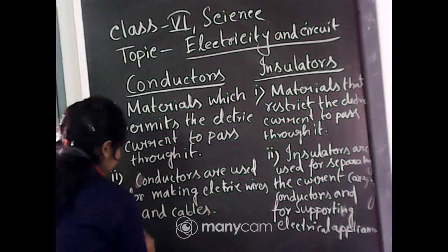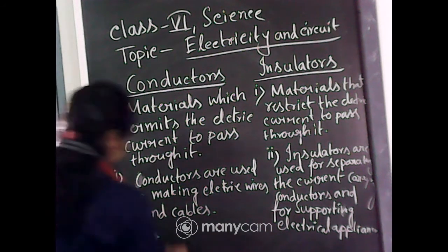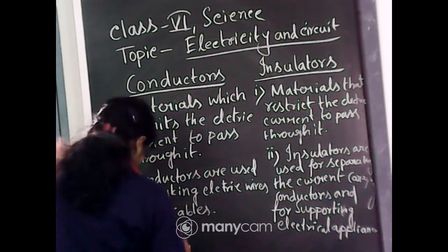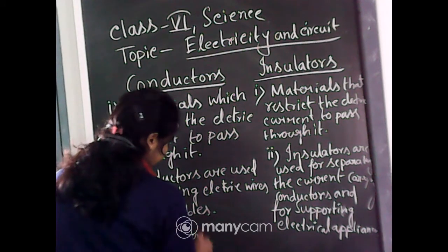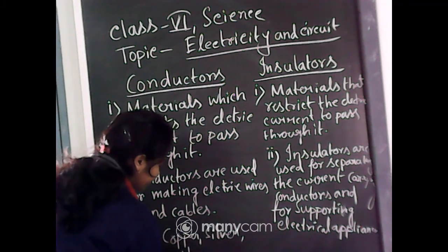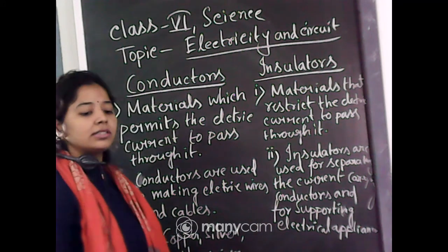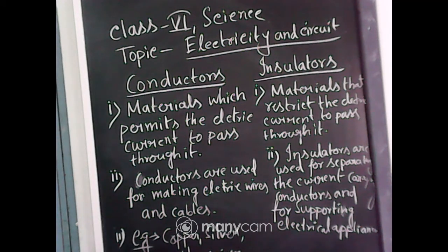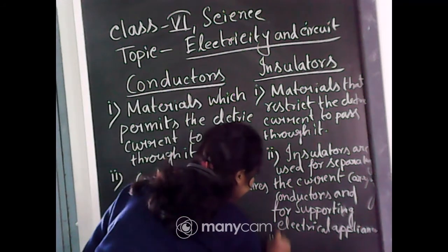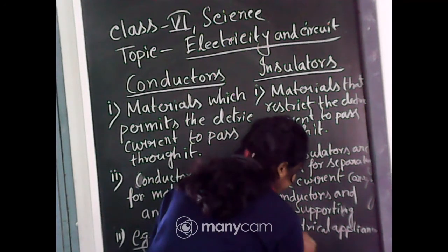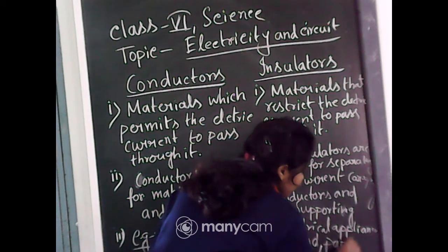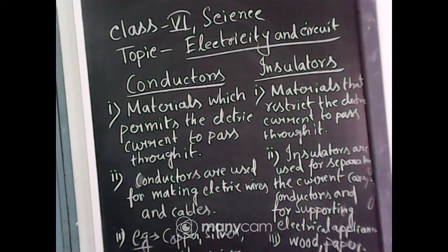Examples of conductors: copper, silver, aluminium, and graphite. Examples of insulators: wood, paper, and plastic. Have you written this portion, everyone? Any problem up to this point?